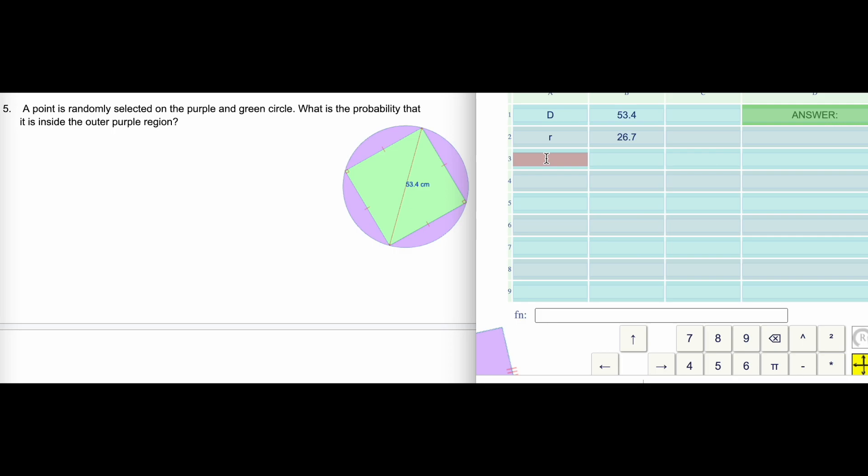We need to know the area of the circle is pi times the radius squared. The area of the square - this is the radius, right, and we know the radius. We can say half of the square. I'm looking at this triangle. We know the base of the triangle is 53.4 and the height of the triangle would just be the radius.